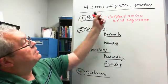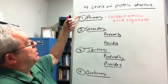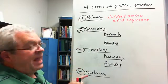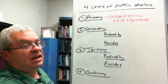All right, let's recap what we said about the four levels of protein structure: primary, secondary, tertiary, and quaternary.